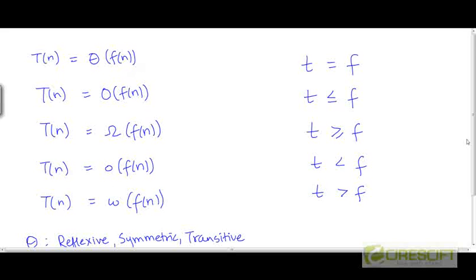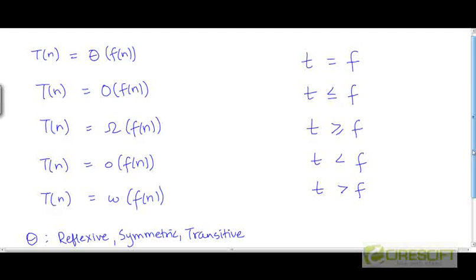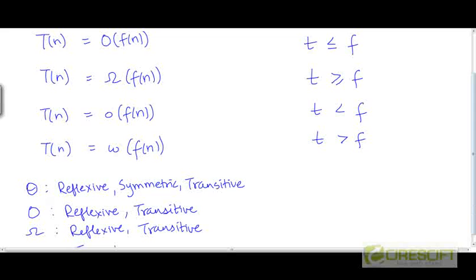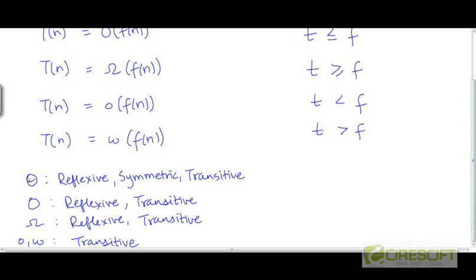So if you think of these asymptotic notations as relationships between two functions, we have shown in the last video that the θ relation between two functions is reflexive — t is θ(t). It is symmetric: if t is θ(f), then f is θ(t). And it is transitive: if t is θ(f) and f is θ(g), then t is θ(g).